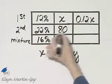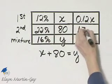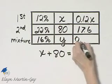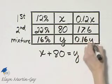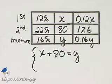And then this times this, if you multiply those two numbers that's 0.22 times 80, you'll have 17.6. And then this times this, that's 0.16Y. What is my other equation then of my system?